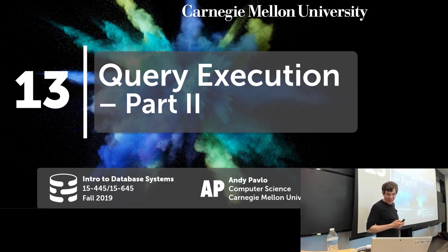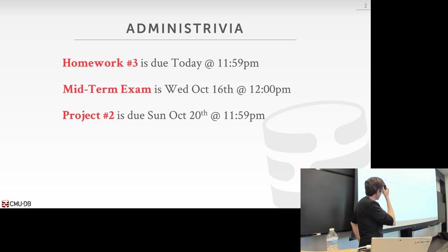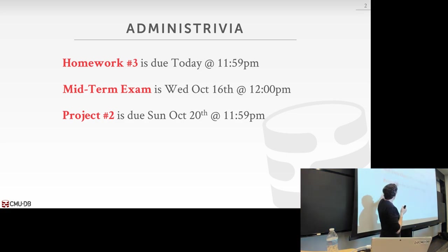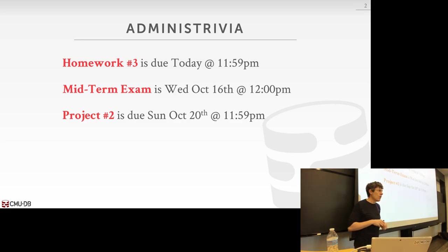Your problems are these things: Homework three is due today at midnight. The midterm exam will be in class a week from today. At the end of this lecture we'll do a review of what's expected for the midterm. And then project two will be due on Sunday, October 20th. Any high-level questions about any of these things?